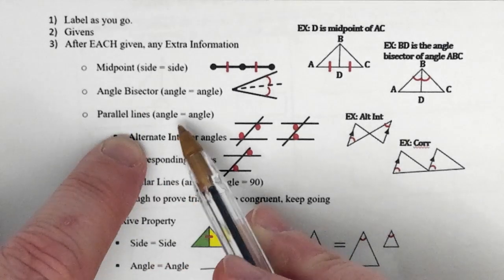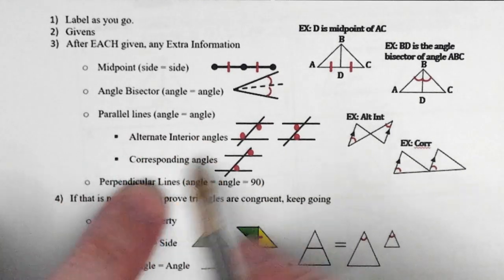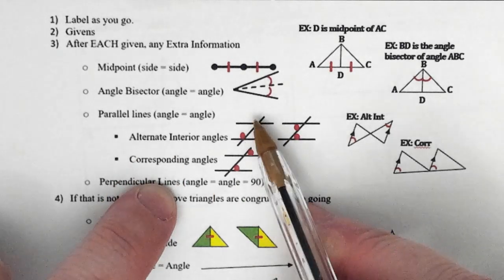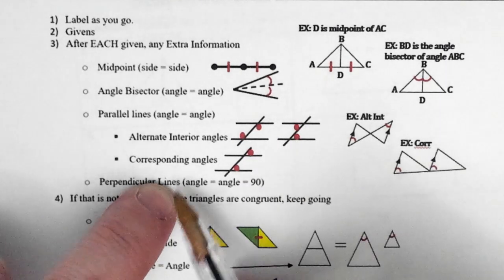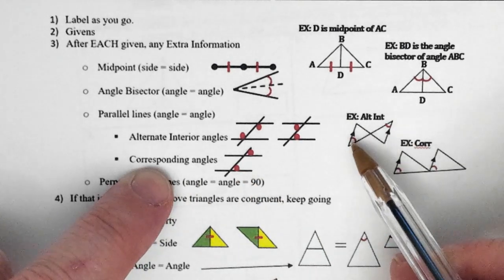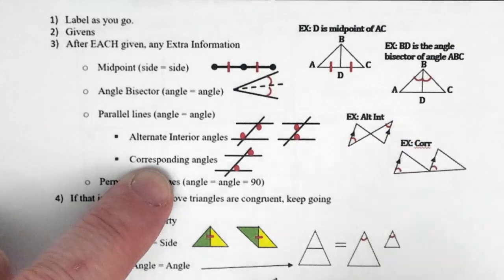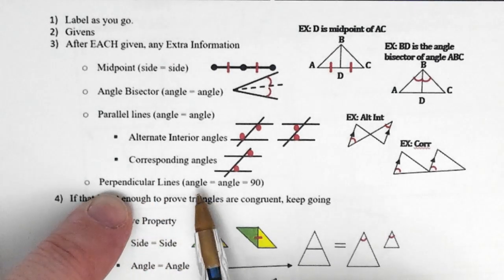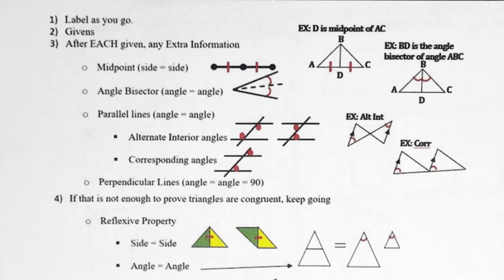If you have parallel lines, in a second we're going to say angle equals angle. Your two best friends are alternate interior angles and corresponding angles. Alternate interior angles are on alternate sides of the transversal and both on the interior of the parallel lines. Corresponding angles are basically a copy-paste from one parallel line to the other. If the lines are perpendicular, then we're going to say an angle is equal to 90 degrees.